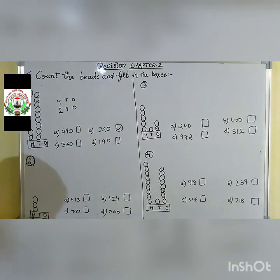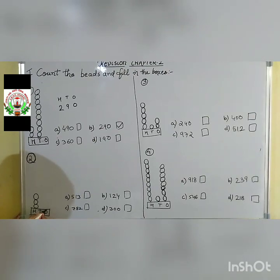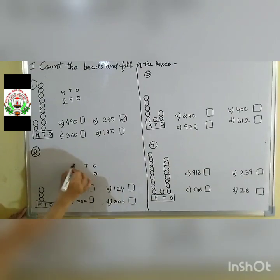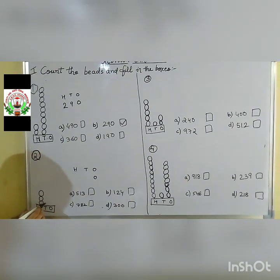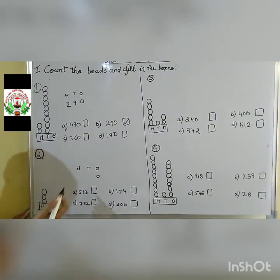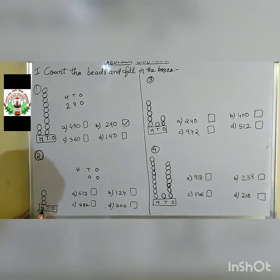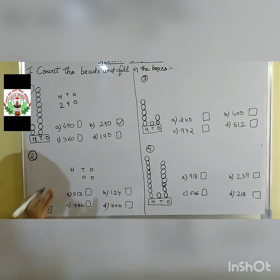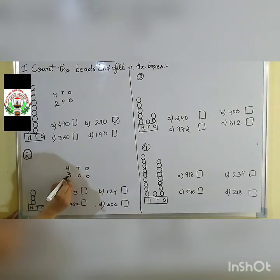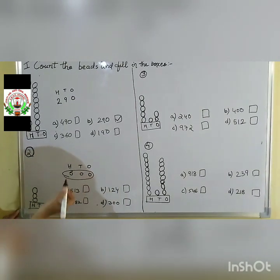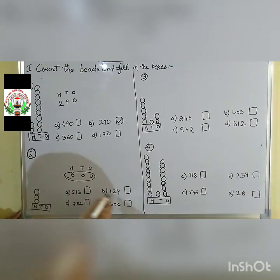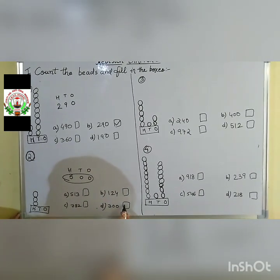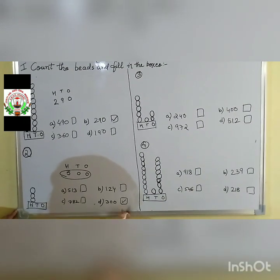Next question: in the 1s place, any bits? No — so 0. In the 10s place, any bits? No — again 0. In the 100s place, count: 1, 2, 3 — 3 bits. So our number is 300. Option B is 300. We put the correct tick mark on option B, 300.